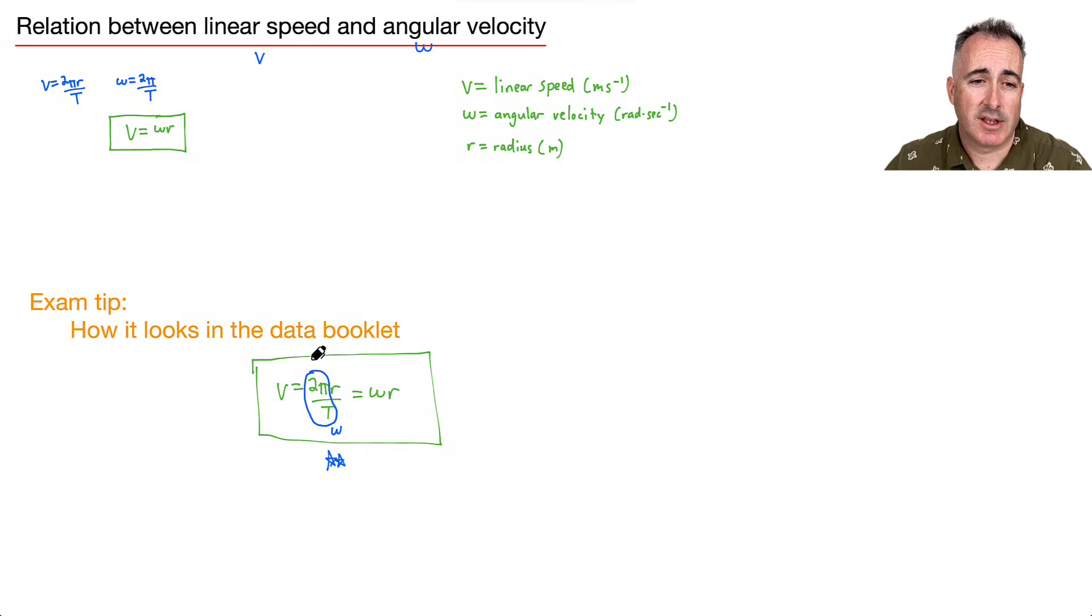If you need, that's the key. That's why I like using the data booklet, because you can take this piece of v equals 2 pi r over t equals omega r. And you can know that, hey, omega then must be this 2 pi over t. So that's, I think, a nice little trick for you to actually find everything that you need for these.